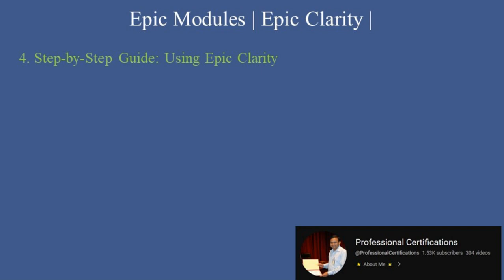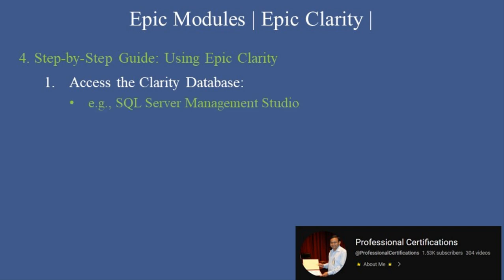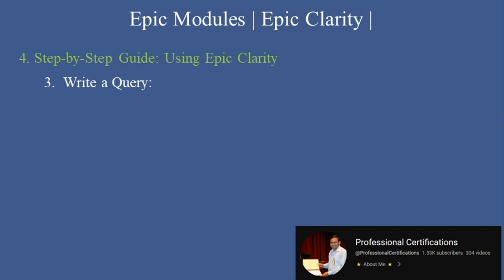Step-by-step guide: using Epic Clarity. Scenario: generating a patient outcomes report. Step 1, access the Clarity database — use a SQL-based tool, e.g. SQL Server Management Studio, or an Epic-approved BI platform to connect to Clarity. Step 2, choose a dataset — identify the relevant tables, such as patient demographics, lab results, or visit history.